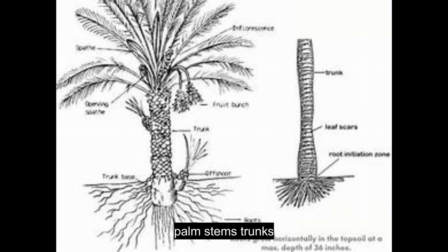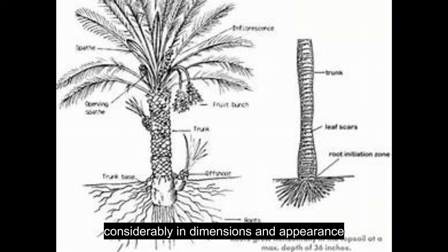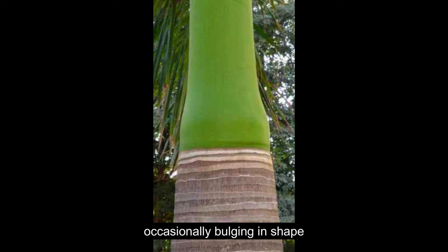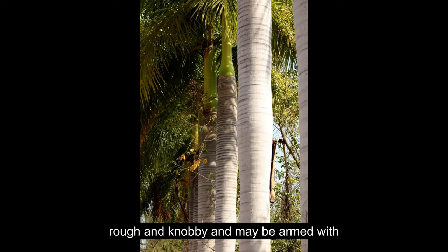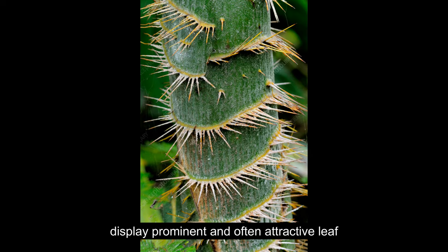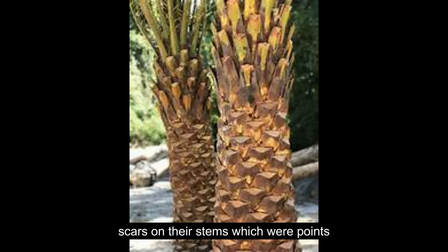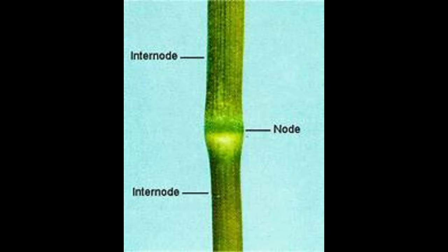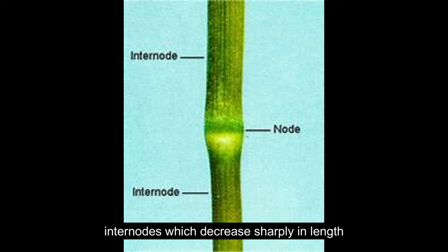Palm stems and trunks vary considerably in dimensions and appearance among species, but in general they are cylindrical to slightly tapered and occasionally bulging in shape. The surface may be smooth to extremely rough and knobby and may be armed with sharp spines. Some species display prominent and often attractive leaf scars on their stems, which were points where leaves were attached to the stem. The spacing between these leaf scars, called internodes, is a function of the rate of stem growth. Younger palms produce the longest internodes, which decrease sharply in length as the palm matures.